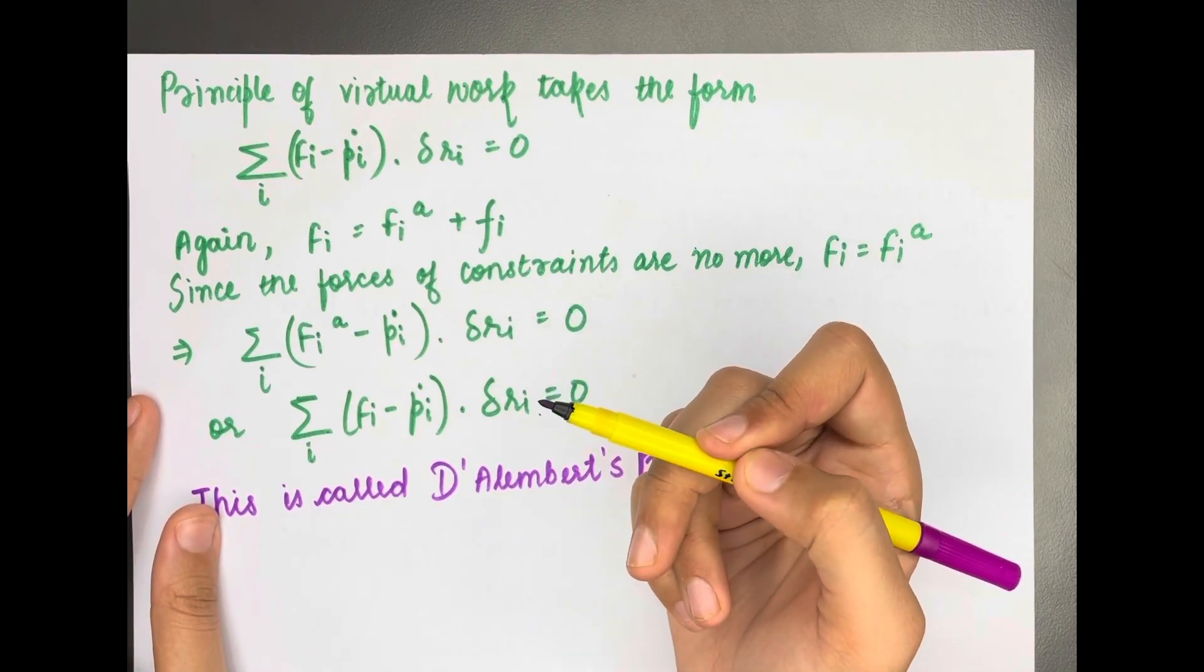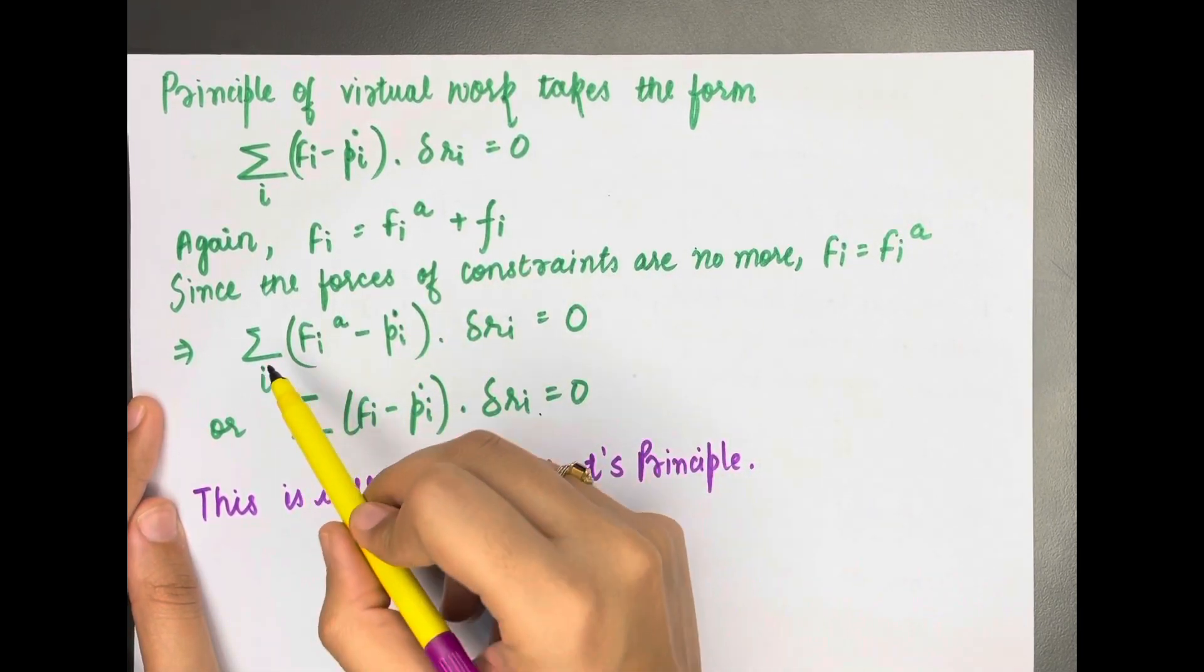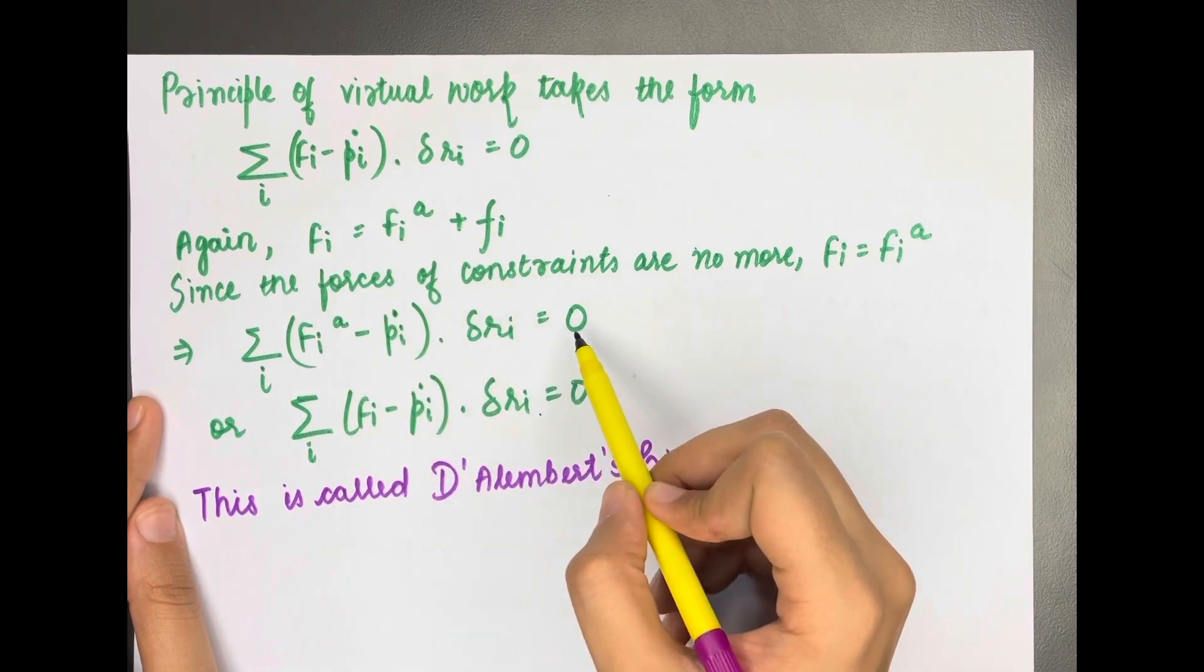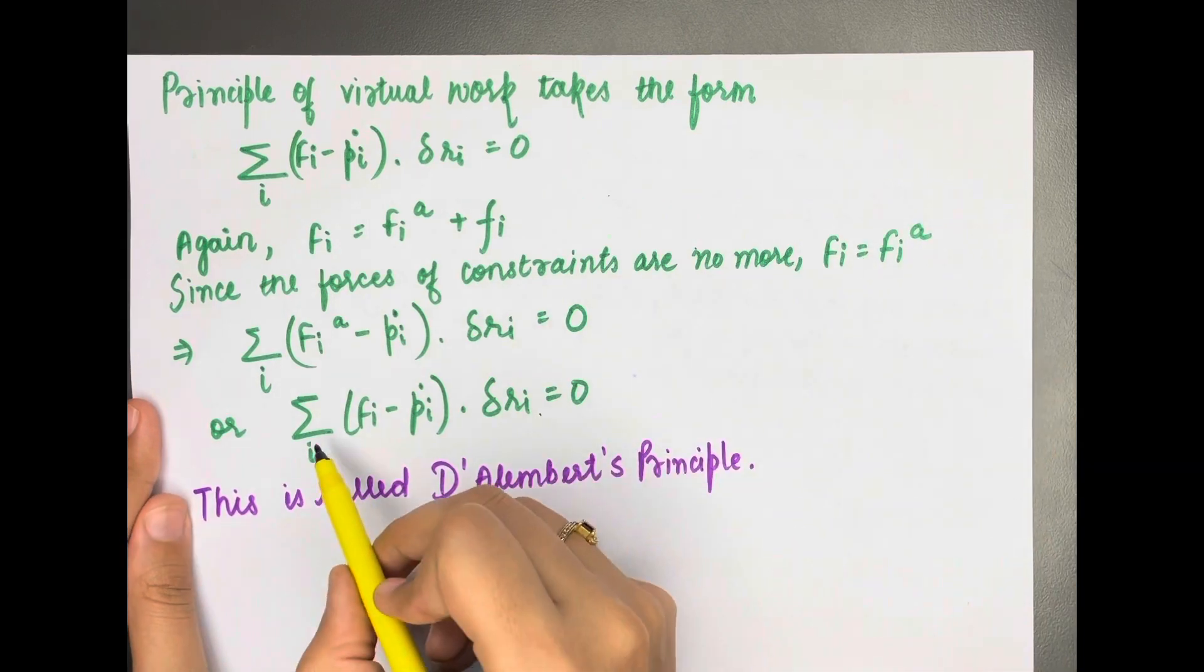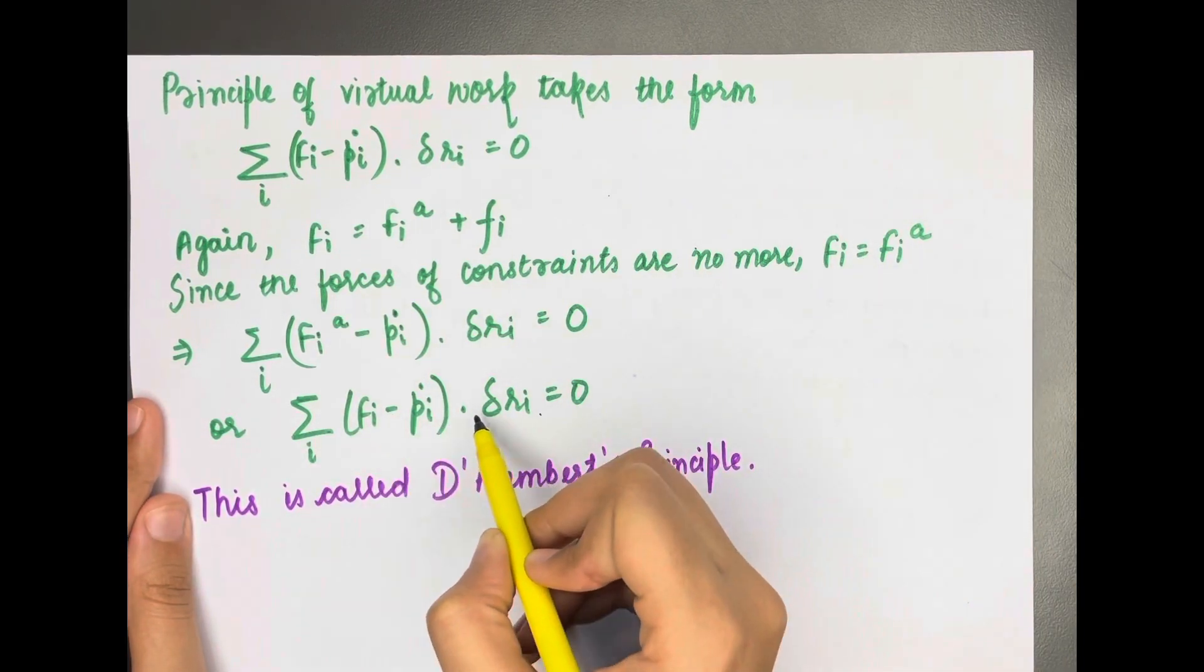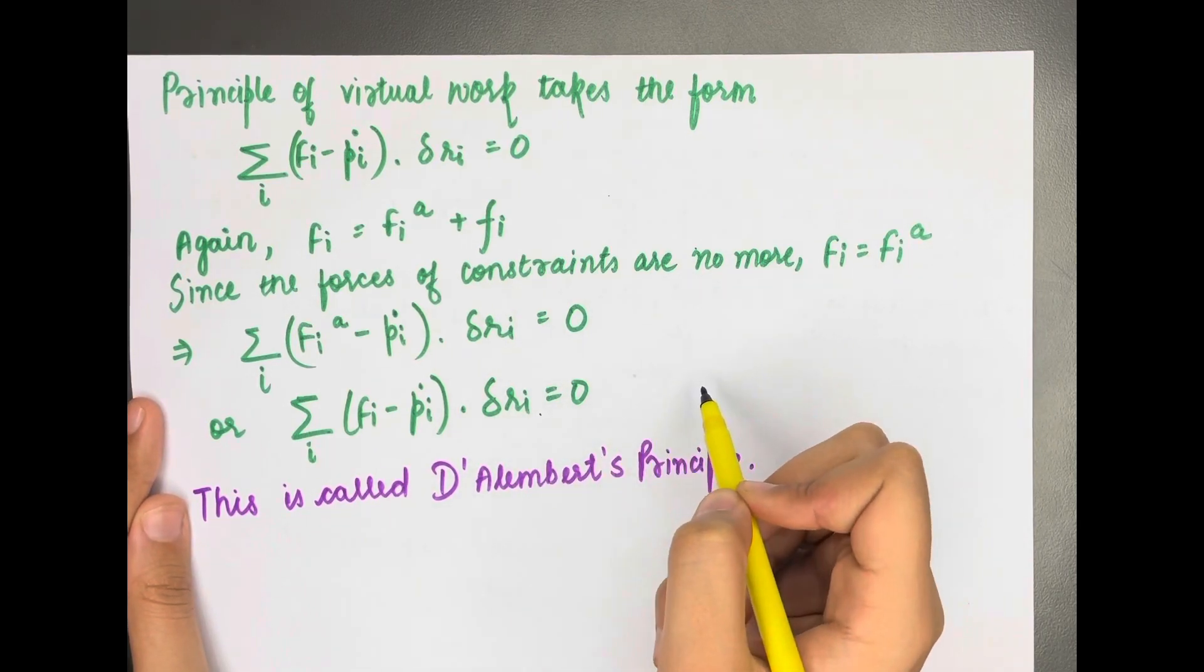The principle of virtual work becomes: summation over i of (Fi^a - pi dot) · δri = 0. Now we know Fi^a equals Fi, so we will simply write it as summation over i of (Fi - pi dot) · δri = 0. This is D'Alembert's principle. By using this expression, we are going to derive the Lagrange equations, which are very important from an exam point of view.